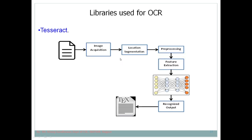In the OCR field, Tesseract is one of the open-source libraries provided by Google for optical character recognition. It works through image acquisition, image localization, pre-processing, and feature extraction. Since it involves deep learning, neural network architectures are used — specifically CNN or variations of CNN to extract features from the image. The recognized text is then stored in a document.